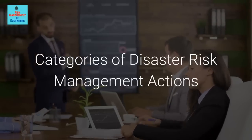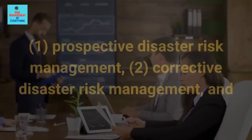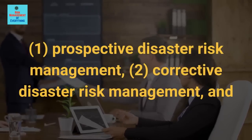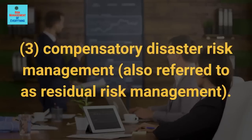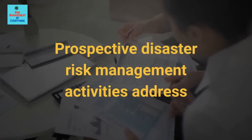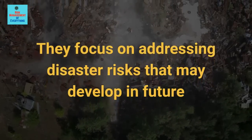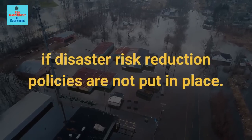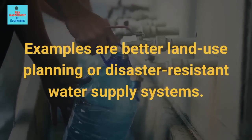Disaster risk management actions can be classified into three categories: 1 – Prospective Disaster Risk Management, 2 – Corrective Disaster Risk Management, and 3 – Compensatory Disaster Risk Management, also referred to as Residual Risk Management. Prospective disaster risk management activities address and seek to avoid the development of new or increased disaster risks. They focus on addressing disaster risks that may develop in future if disaster risk reduction policies are not put in place. Examples are better land use planning or disaster-resistant water supply systems.